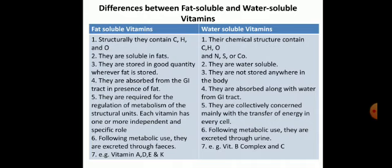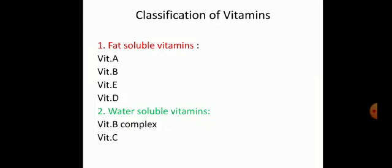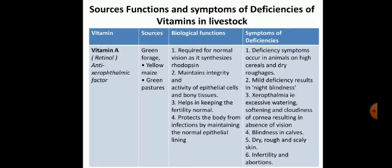Examples of fat-soluble vitamins are A, D, E, and K. Examples of water-soluble vitamins are vitamin B complex and C. Looking at this slide or chart, we can see the sources, functions, and symptoms of deficiencies of vitamins in livestock.